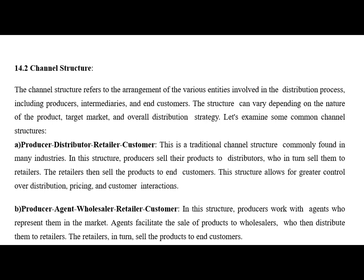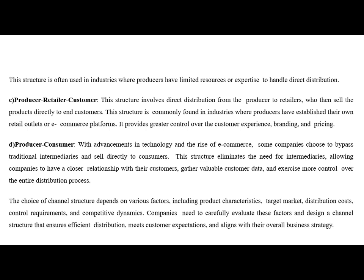Number one, the traditional structure: Producer → Distributor → Retailer → Customer. This is commonly found in many industries. Producers sell products to wholesalers and distributors, who in turn sell to retailers, and retailers then sell to end customers. Another structure is Producer → Agent → Wholesaler → Retailer → Customer. Here, producers work with agents who represent them in the market. Agents facilitate the sale of goods to wholesalers, who distribute to retailers, and retailers finally sell to end consumers. This structure is often used in industries where producers have limited resources or expertise to handle direct distribution.